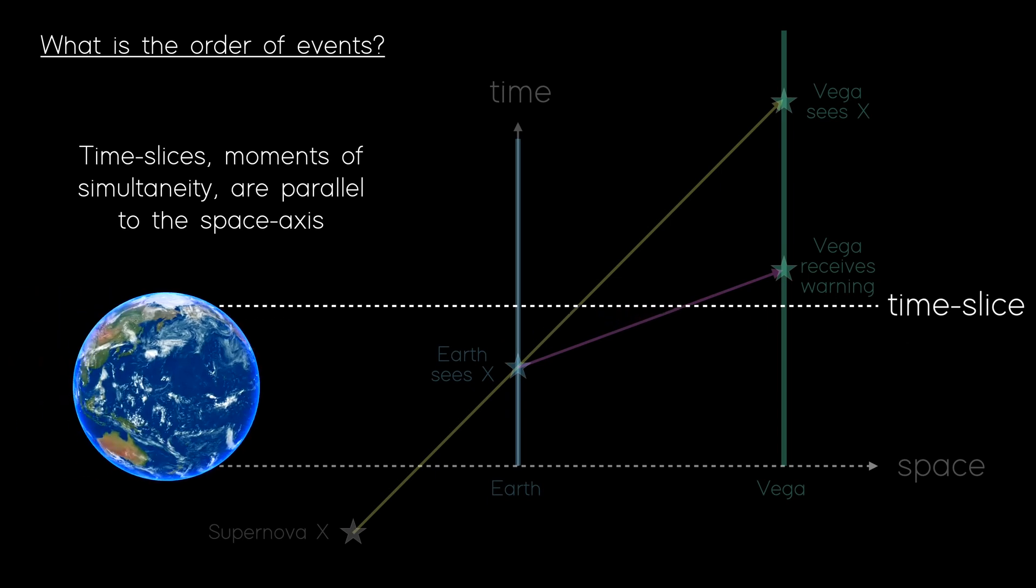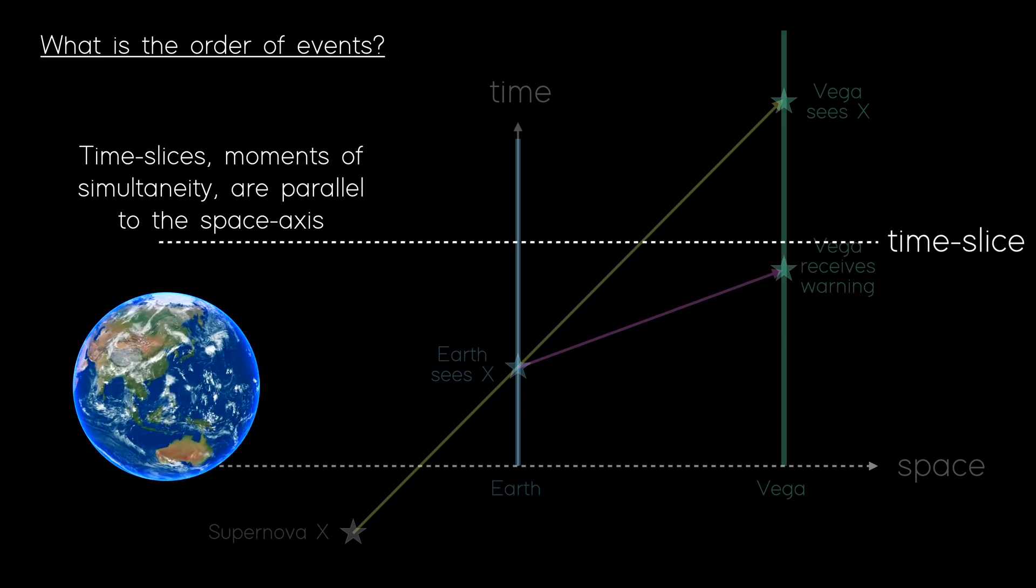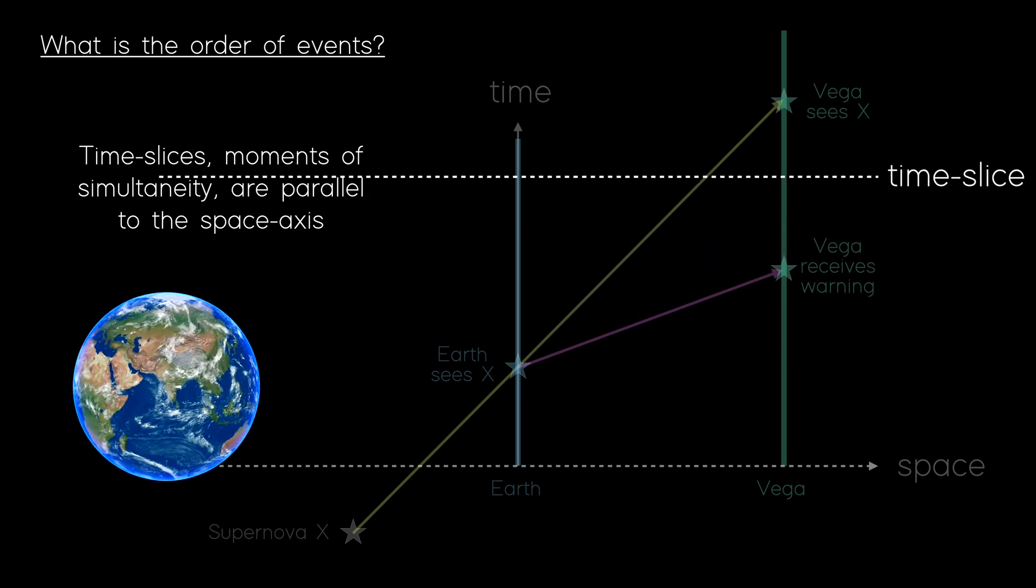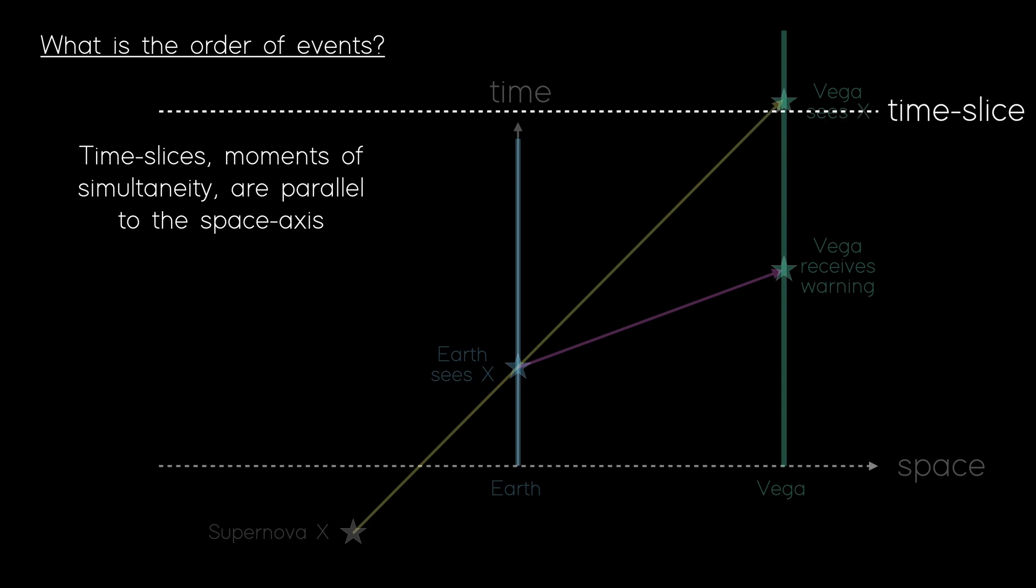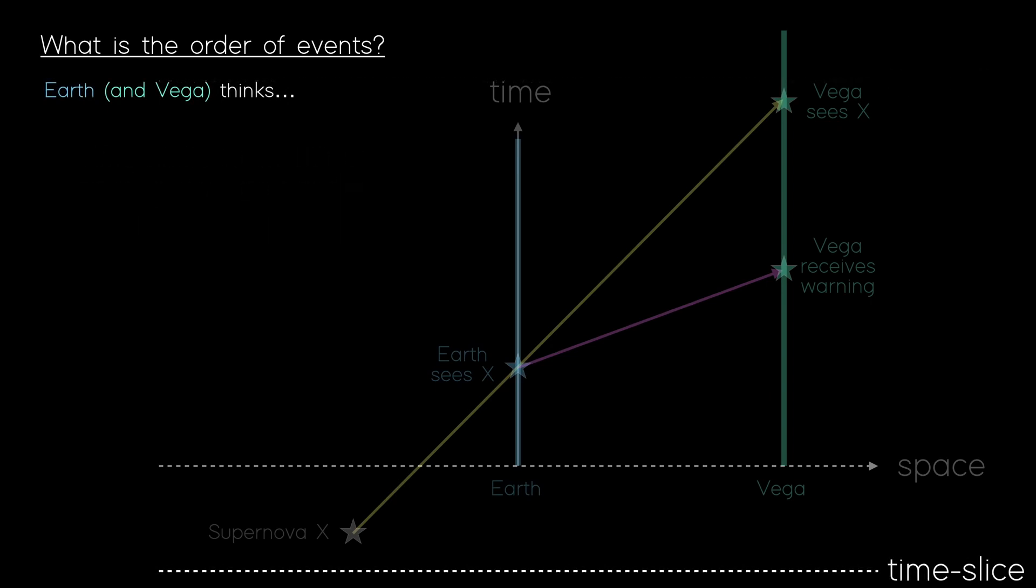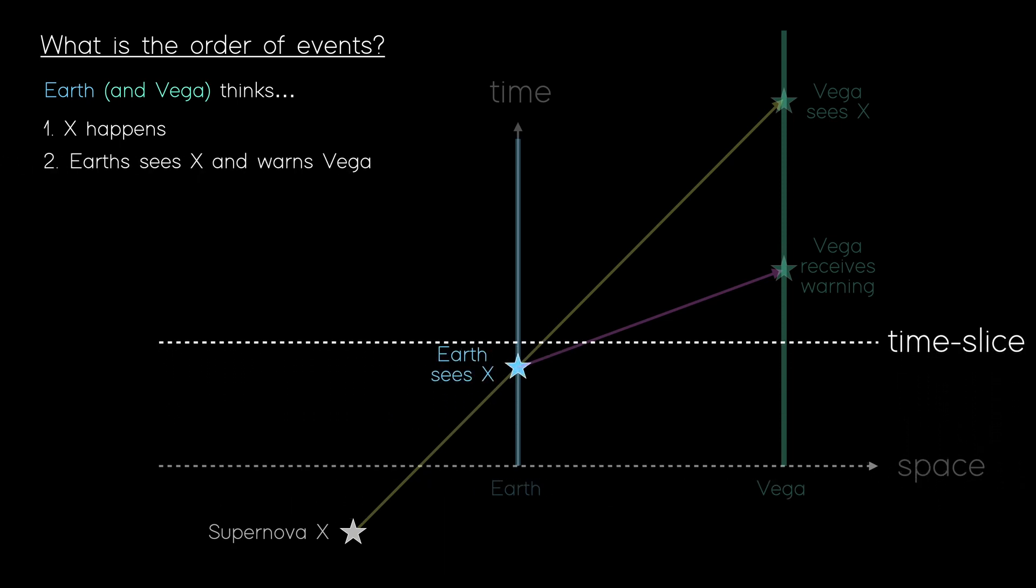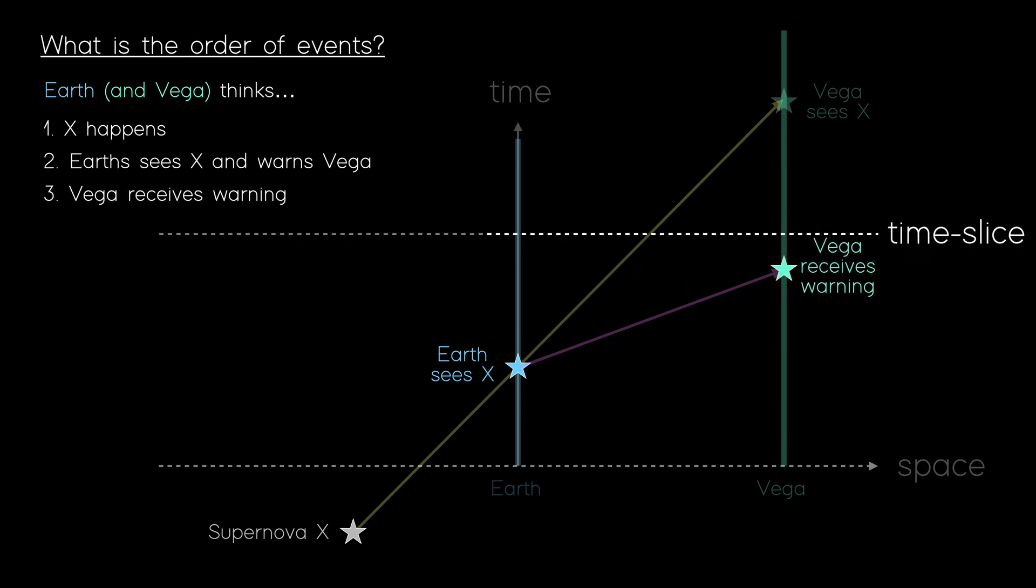And remember, I'm in Earth's reference frame here, so the time slices here are time as perceived by Earthlings, although this is also equivalent for Vegans too. So, sliding up the page, we can see that the first event is that Supernova X occurs. Sliding further up, we can see that the next event is that Earth sees X and warns Vega. Going further, third, we see that Vega receives the warning. And once more, finally, we see that Vega sees X.